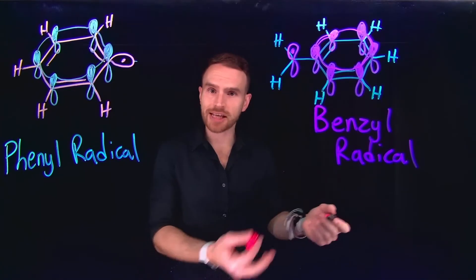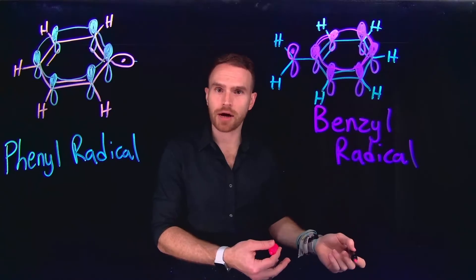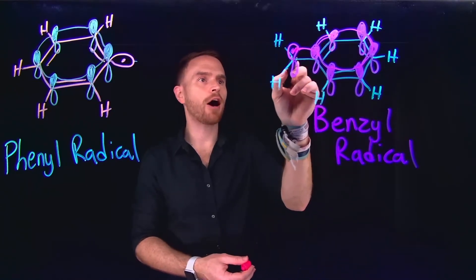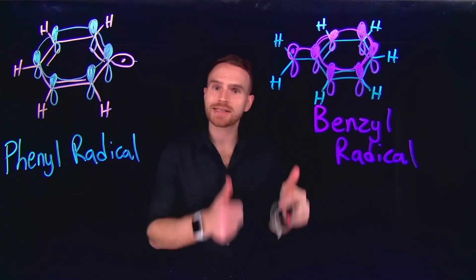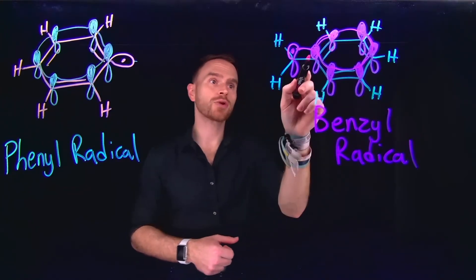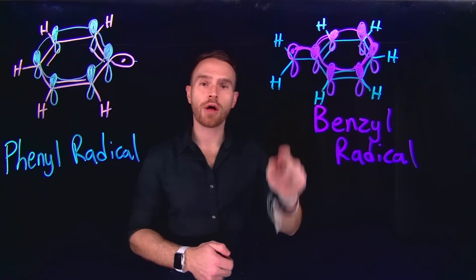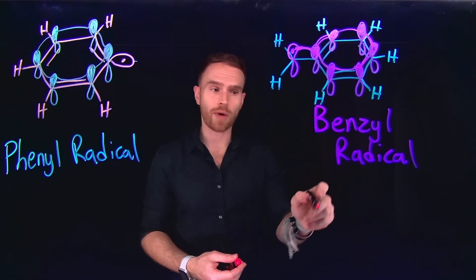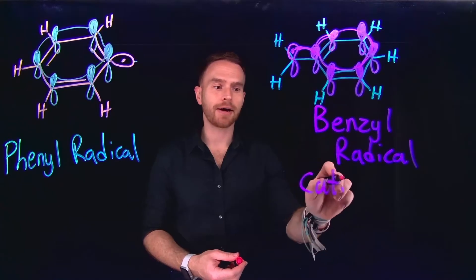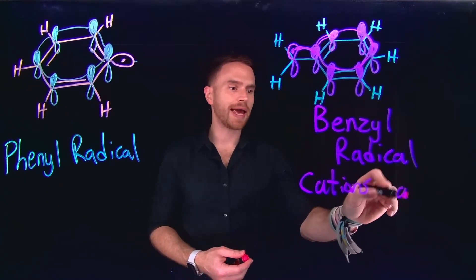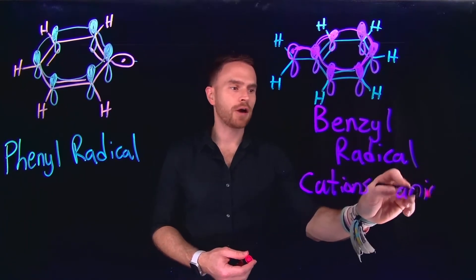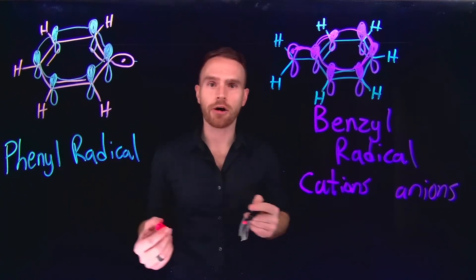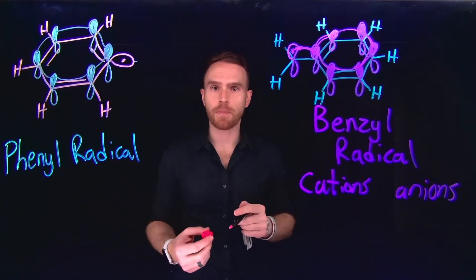Now if we evaluate a benzyl radical, we still have the same conjugation occurring between the pi molecular orbitals inside of the cyclic part of the compound, but the carbon adjacent to it at the benzyl position has a radical in an unhybridized p orbital. This carbon position is sp2 hybridized, which leaves behind an unhybridized p orbital, and notice that it is on the same plane with the axes going parallel to one another so that we have an additional level of stability. For this reason, benzyl radicals, benzyl cations, and even benzyl anions are incredibly stable, especially compared to their counterparts on a phenyl group or just a simple benzene ring.